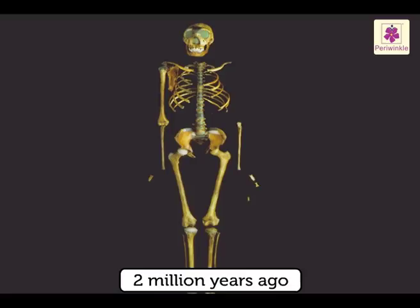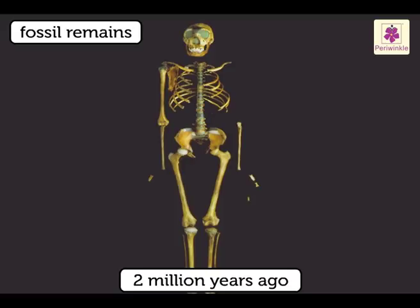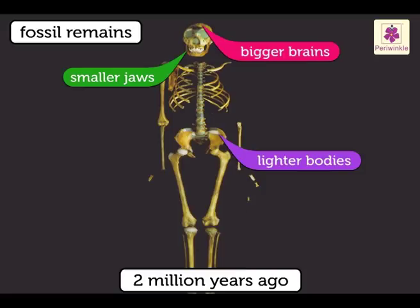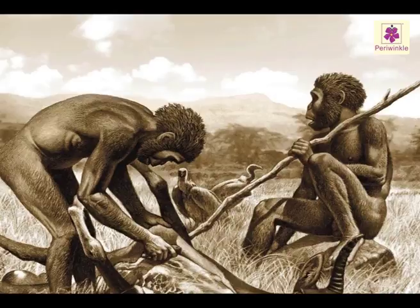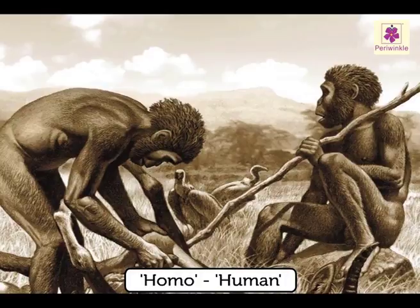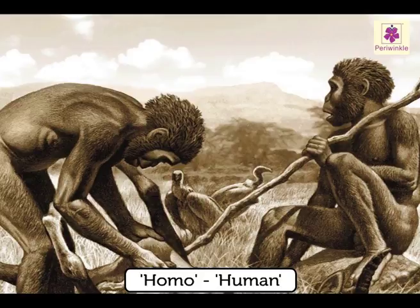About 2 million years ago, the fossil remains showed very visible changes. They had lighter bodies, smaller jaws, and bigger brains. This is the first time that the term 'homo' — the scientific name for human — began to be used. They were called Homo habilis.